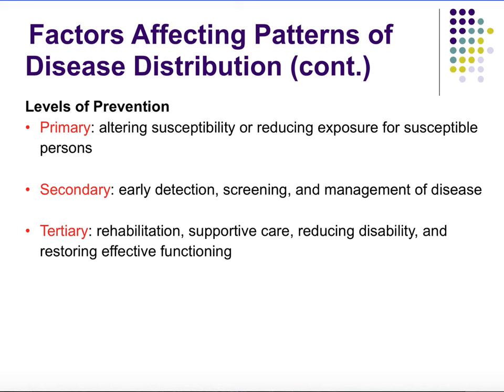It doesn't mean you're not going to get it at all, but your risk is going to be much lower. The secondary level of prevention includes early detection — screening is a great example, because when you screen for something, you're trying to detect it at its earliest stage so that you can address it. Management of the disease also falls under secondary prevention. Then tertiary prevention is where you are doing rehabilitation, supportive care, reducing the disability associated with the disease, and trying to restore function.